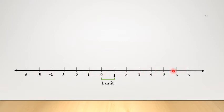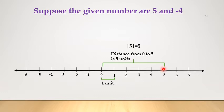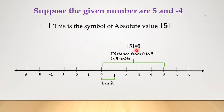Suppose the given numbers are 5 and minus 4. The distance from 0 to 5 is 5 units. Therefore, the absolute value of 5 is 5. Absolute value is indicated by placing vertical parallel bars on either side of a number or expression.